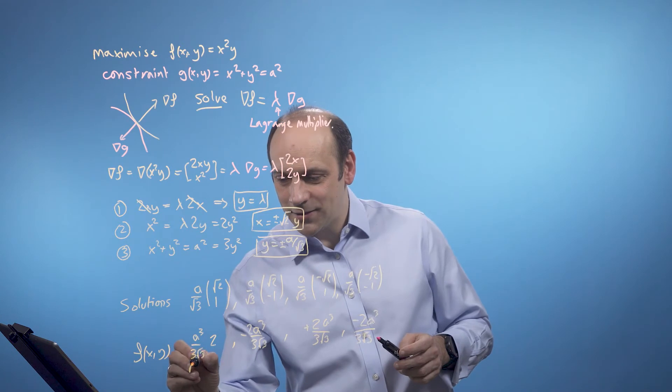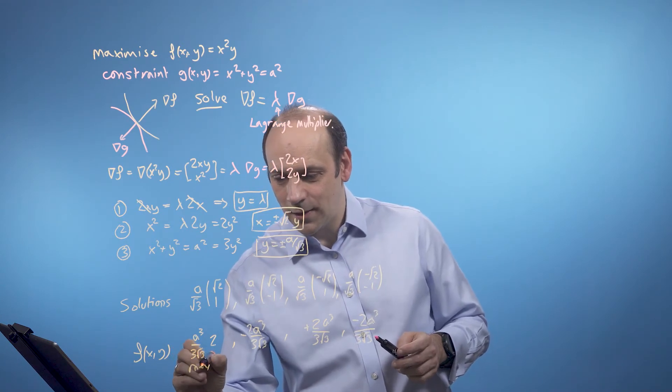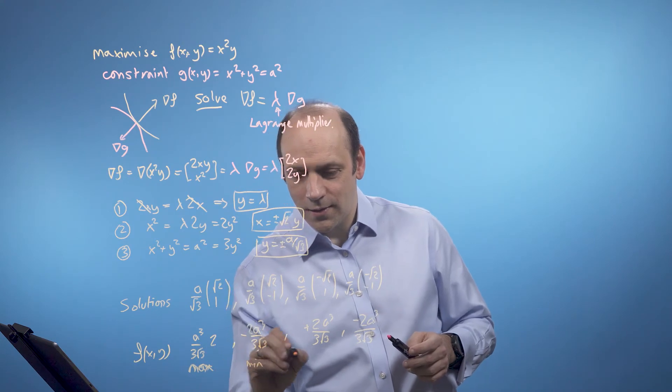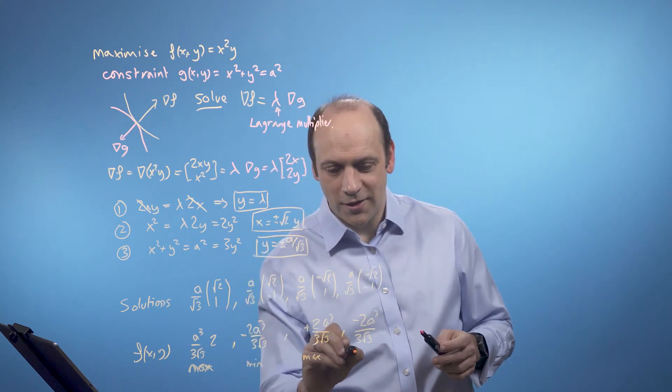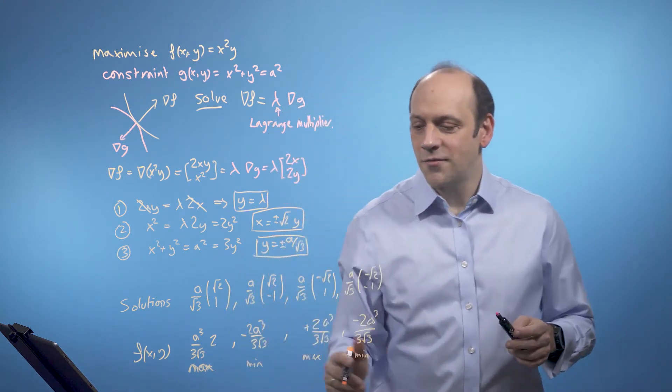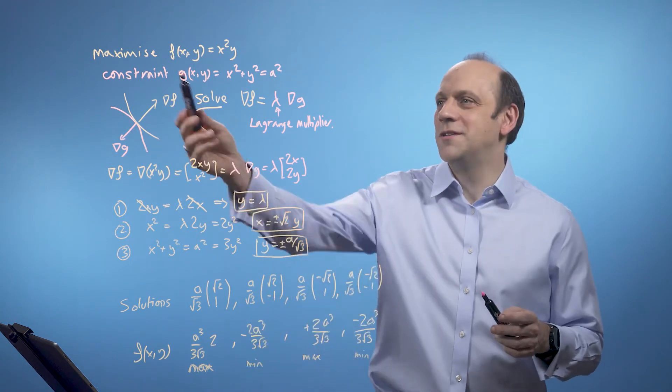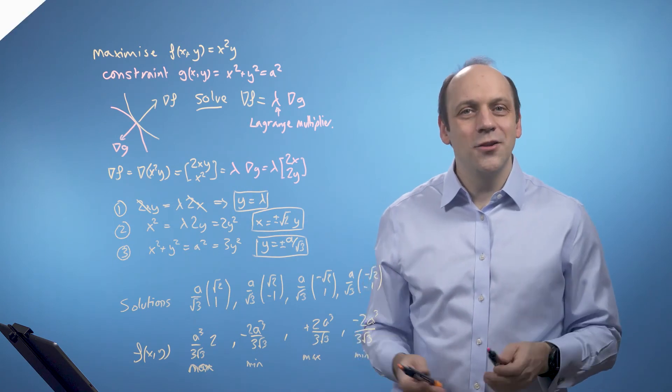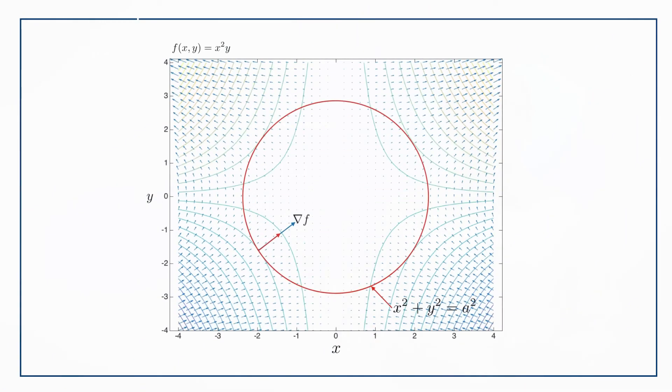So I've got a max, I've got a min, I've got a max, the way I've written it out, and another min. So I've got two positive solutions, and I wanted to find the maximums. So those are there, and I've got the minima as well for free. So let's look at what that looks like now on the graph.